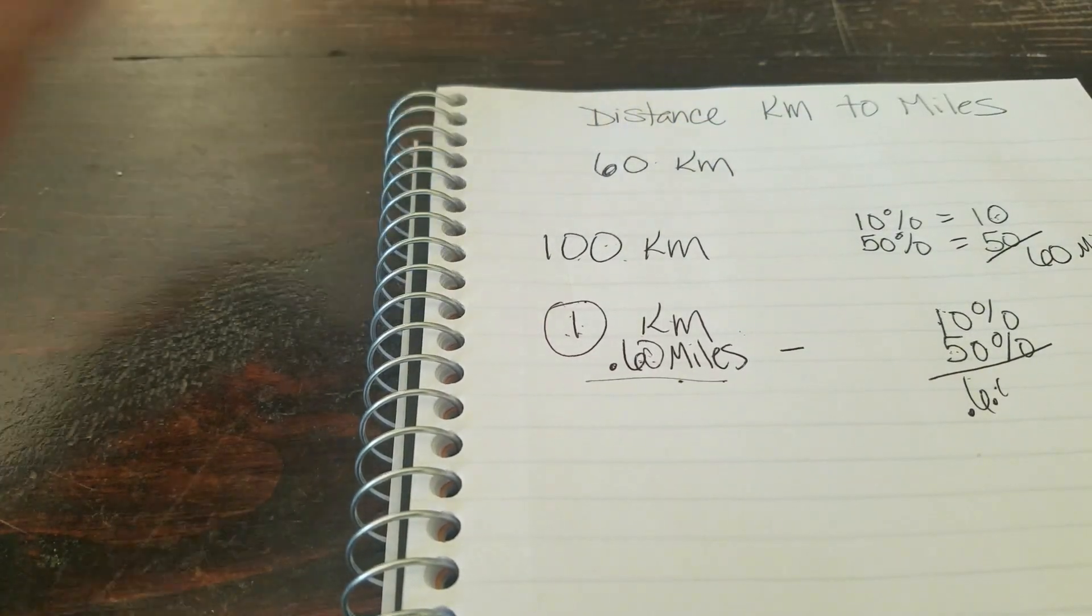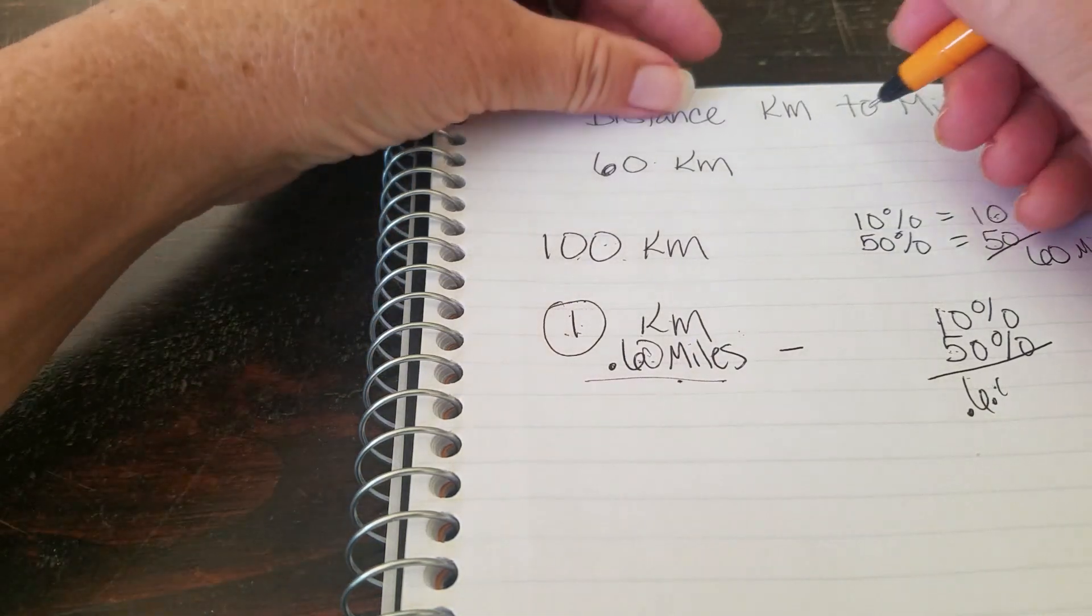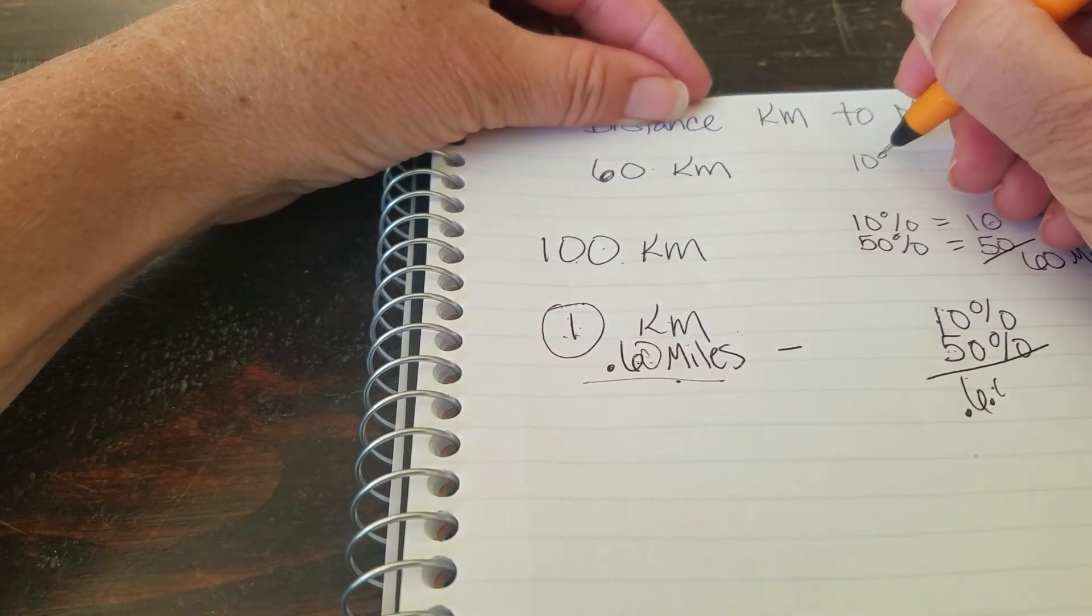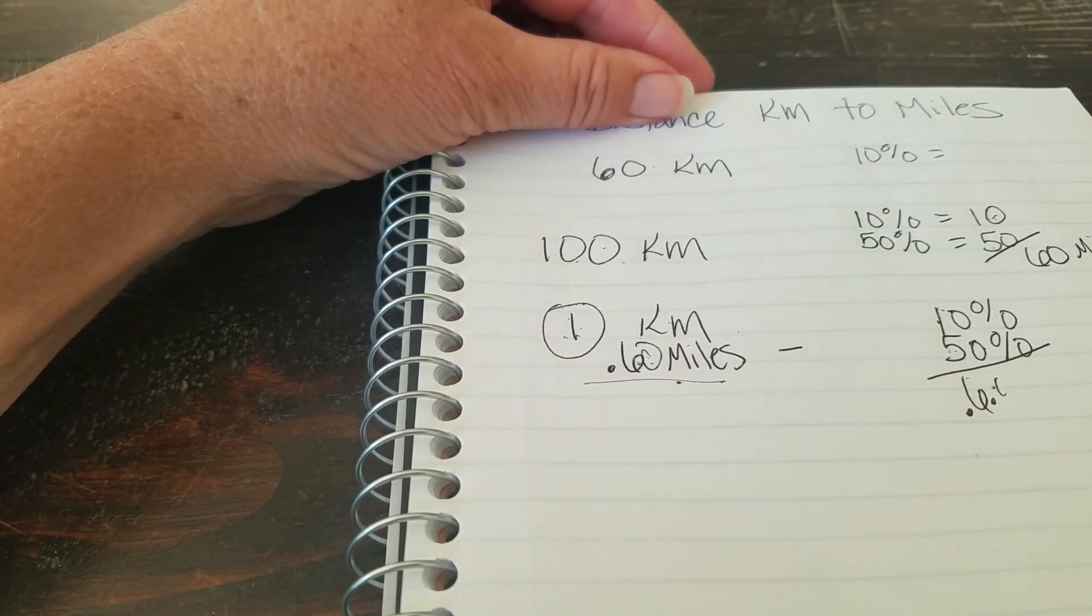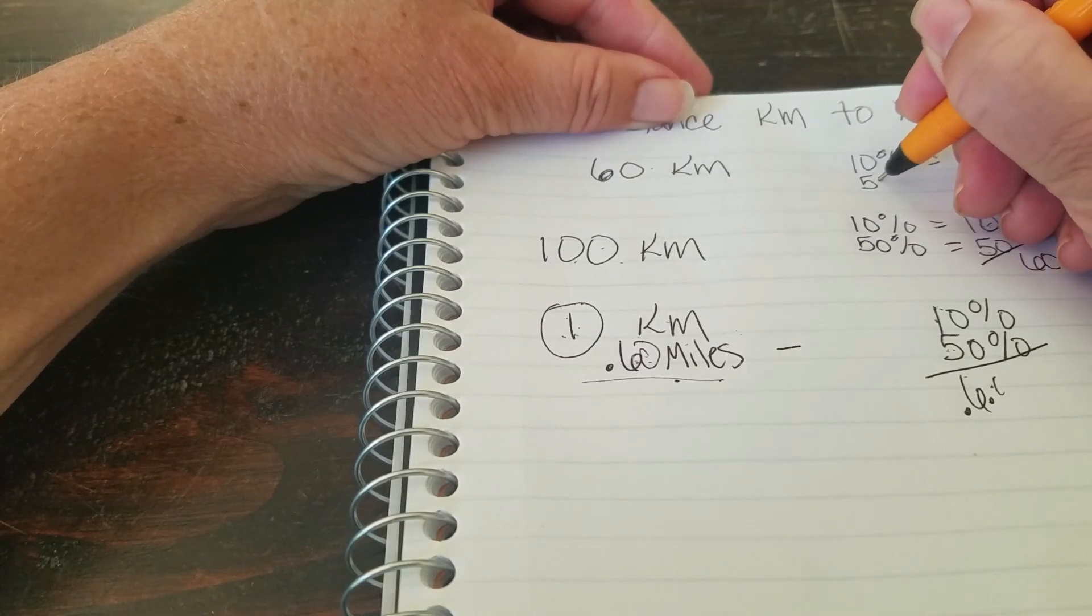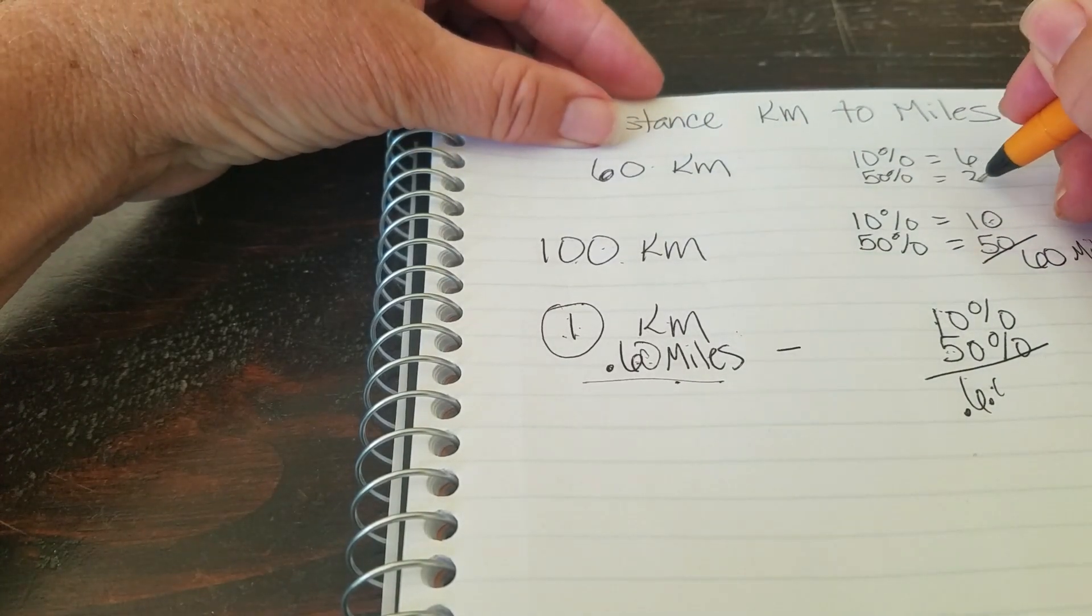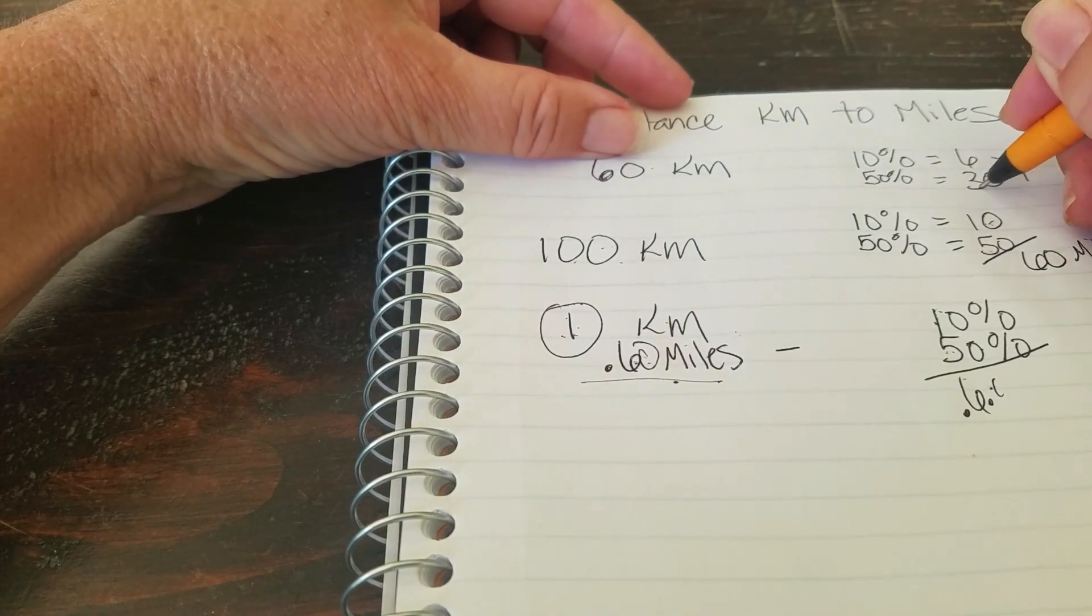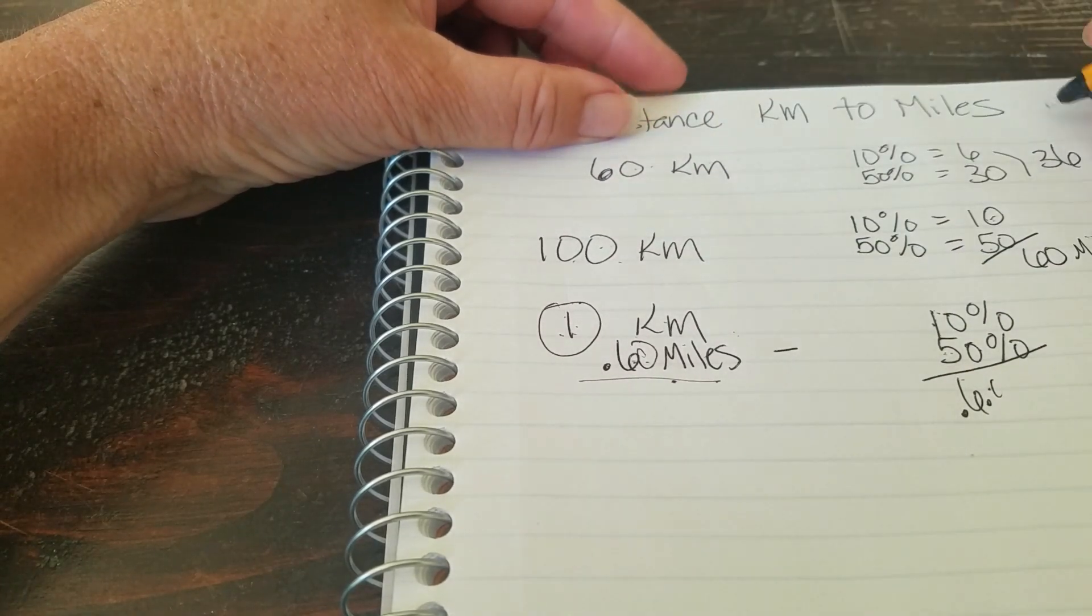We're gonna walk a distance of 60 kilometers to get home because our car broke down. 10% of 60 is 6. 50% is 30. 30 plus 6 is 36. So 60 kilometers is 36 miles.